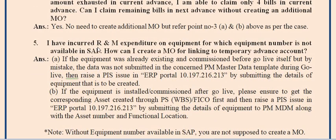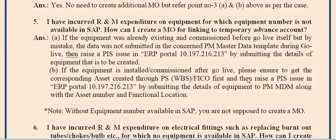Fifth important point: if you have incurred R&M expenditure on equipment for which the equipment number is not available in SAP, there are two cases. Case one: if the equipment already existed and was commissioned before go-live but the data was not submitted in the PM master data template, raise a PIS issue in the ERP portal by submitting the equipment details. Case two: if the equipment was installed and commissioned after go-live, ensure the corresponding asset is created through PS/WBS/FICO modules first, then raise the PIS on the ERP portal with the equipment details, asset number, and functional location to PM MDM.